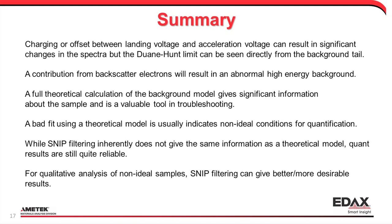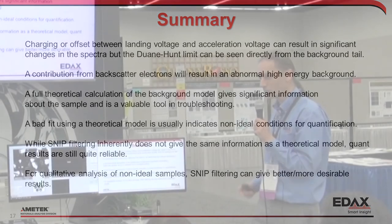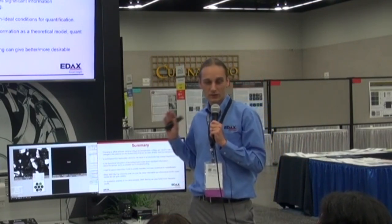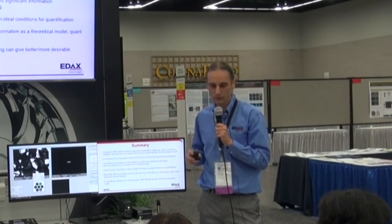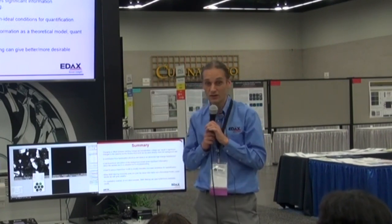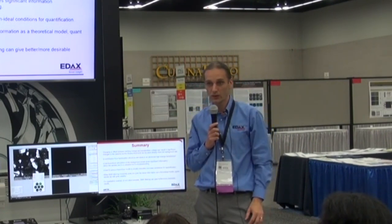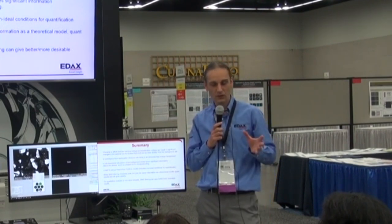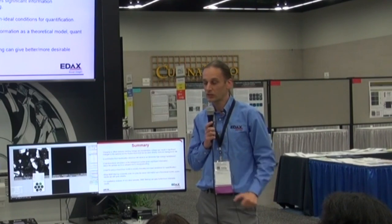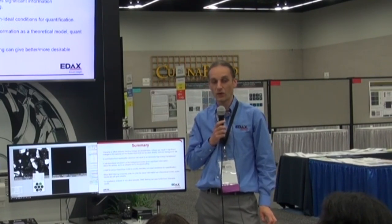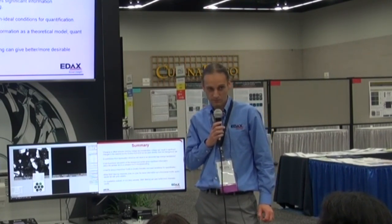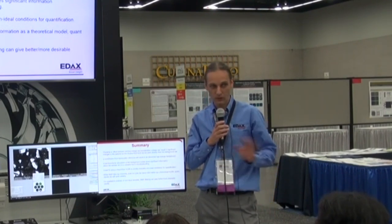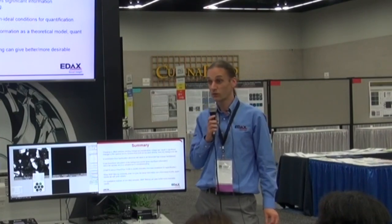If you see a bad fit in the theoretical Bremsstrahlung calculation with one single high energy fit region, that's pretty much an indication you shouldn't click the quant button, or at least not trust the results in a meaningful sense. You can still get a rough qualitative idea of what's in there. The SNP filter gives you a nice clean curve — it's always nicer to show clean curves when handing data to people — and it can be much better for qualitative analysis on non-ideal samples where you shouldn't do quant anyway. But if you need the SNP model to get a good fit, don't trust the quant results. You can get good quant results with SNP, but it all depends on whether the sample meets the requirements for the quantification model.